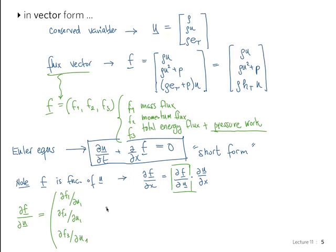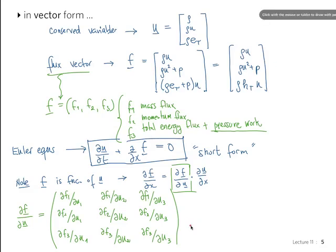The second column is going to be the partial with respect to the second component of U. So we have dF1/dU2, dF2/dU2, and dF3/dU2, and the final column is with respect to the third component of U. So this matrix is called the Jacobian matrix of F.